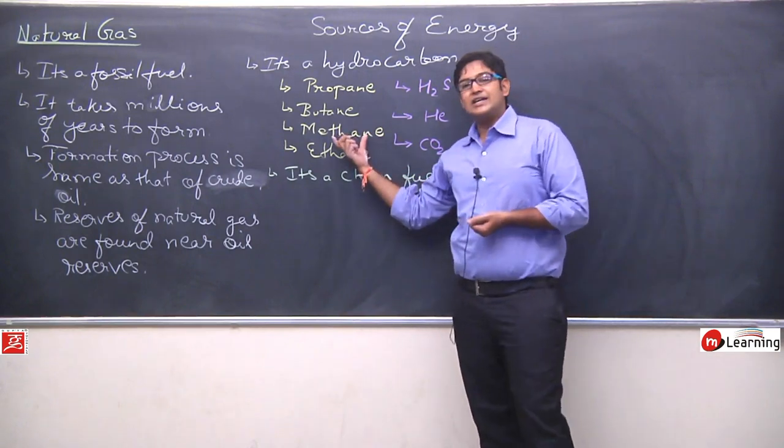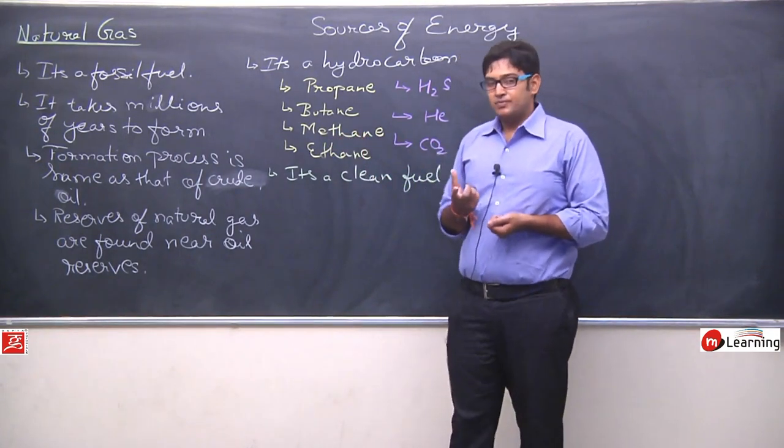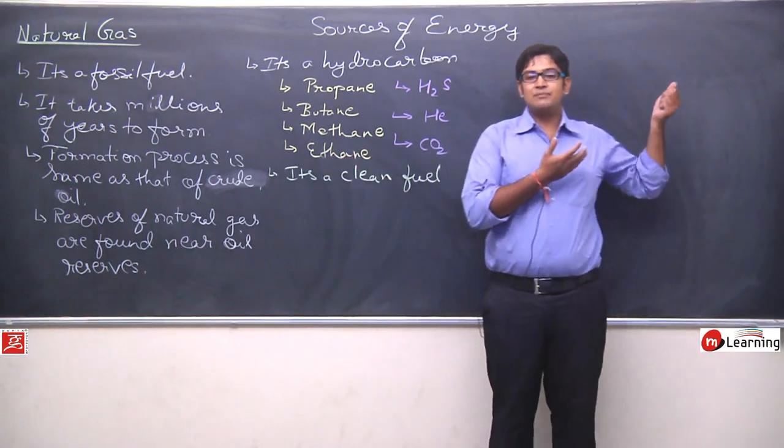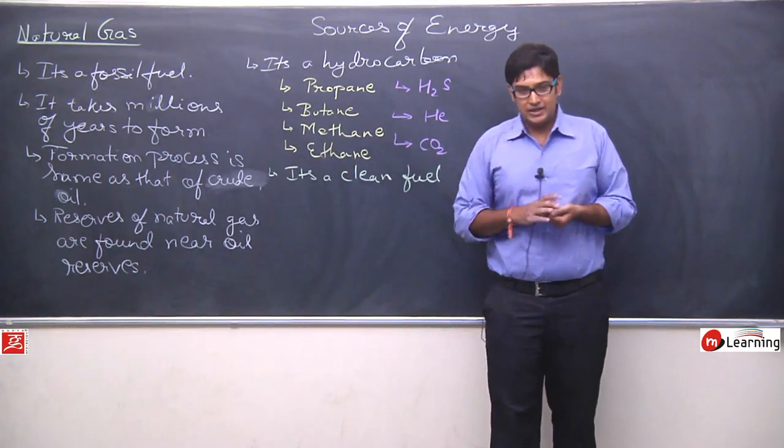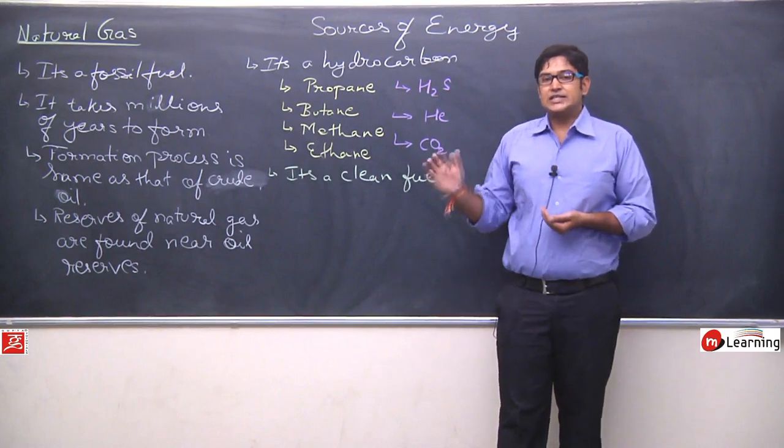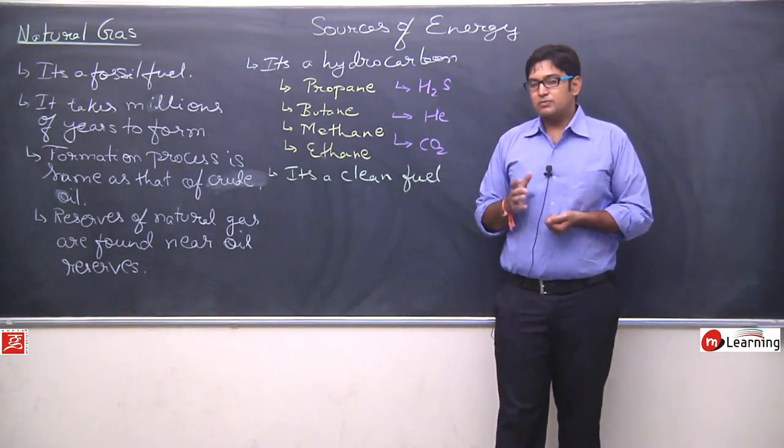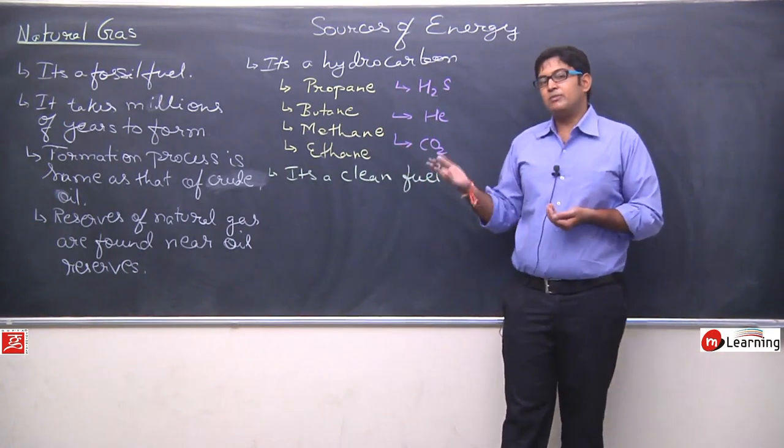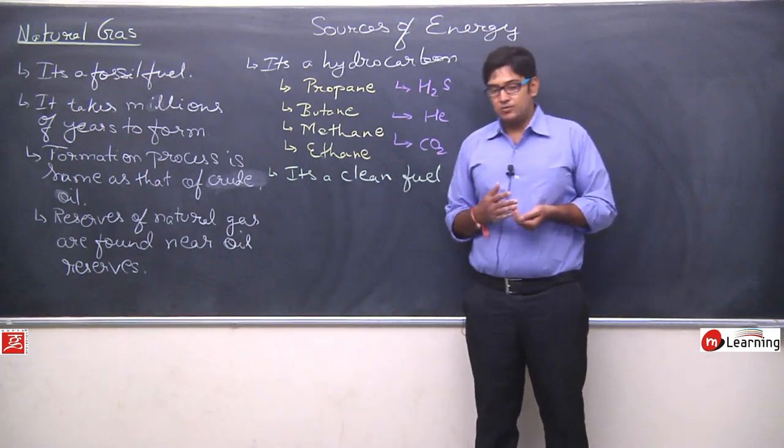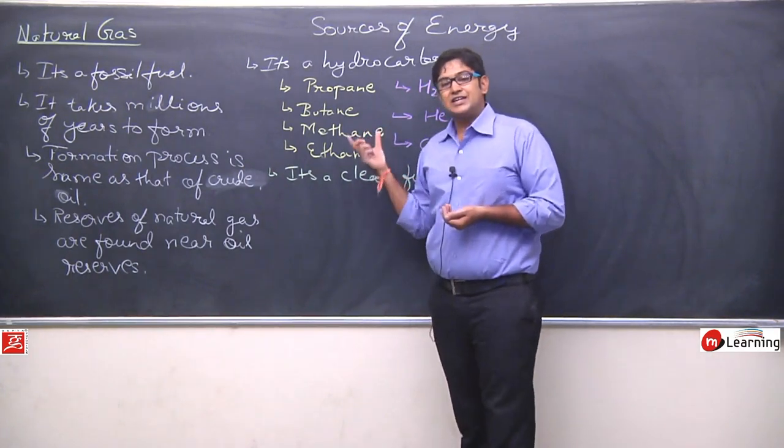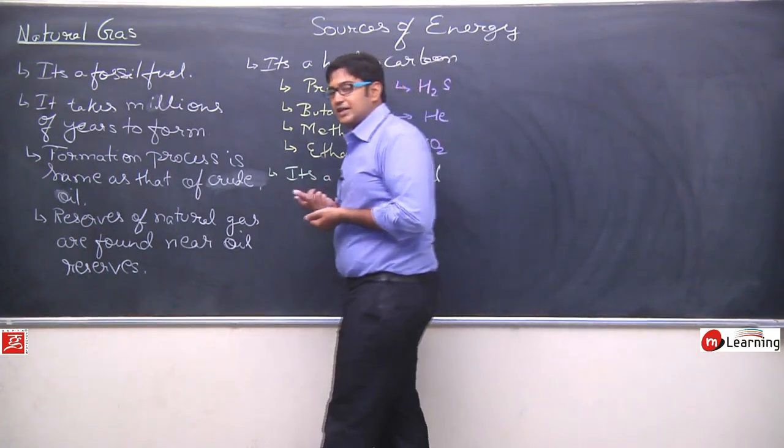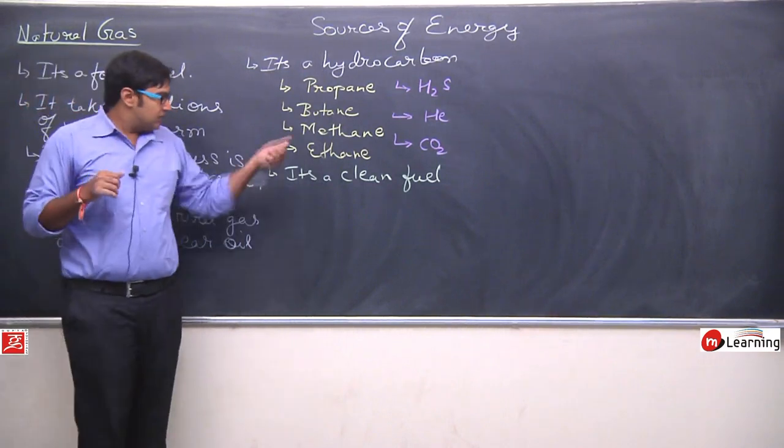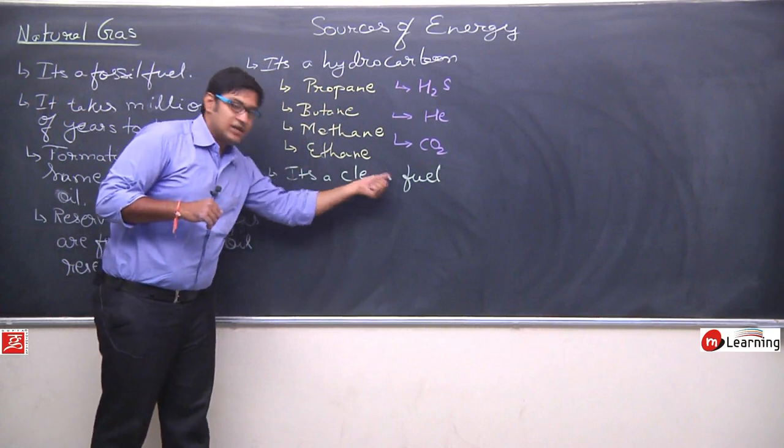Just like we saw LPG was clean because it had these four components. These four components on combustion, on burning, don't create much pollution. They don't give any poisonous substance. That's why we can use it easily. Like methane, methane gas itself has a calorific value of around 55 kilojoules. Methane itself is a very important fuel. So whichever natural gas has more methane content, that natural gas will be better.